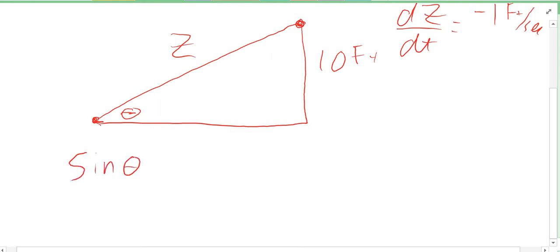Tangent won't work for us because then we'd have to use the base—if you call the base down here x, we don't know how fast that's changing. The only reason we're not using that side is because they're not asking about it and they're not giving it to us.